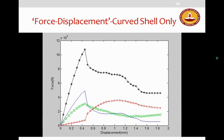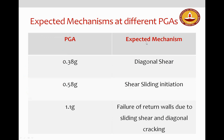The mechanisms obtained are: out-of-plane movement of the facade wall; shear sliding followed by out-of-plane movement of the in-plane return wall; and diagonal cracking followed by out-of-plane movement of the macro block (in-plane return wall with opening). A table shows mechanisms at different PGA levels: diagonal shear initiated at ~0.38g, shear sliding initiation at ~0.58g, and failure of return walls at ~1.1g.